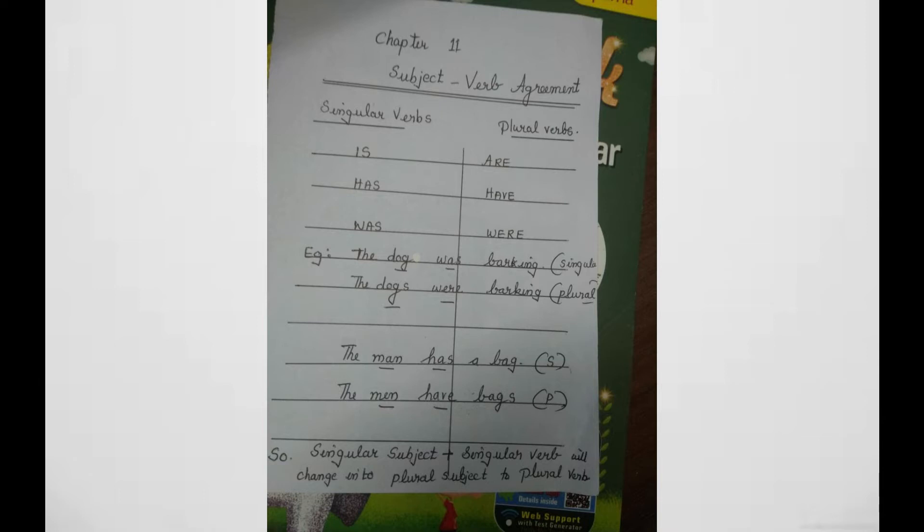So, when you write a sentence, verbs are also singular or plural in number. Is will change into are, has into have, was into were.